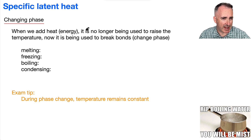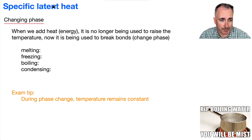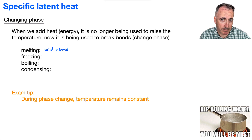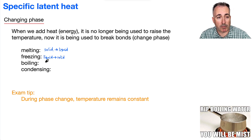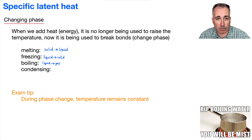It's important to understand the different phases. So melting — what is that? That's when you go from a solid to a liquid. And freezing is the opposite of that, so that's when you go from a liquid to a solid. Now boiling is when you go from a liquid to a gas. And finally, condensing is the opposite — so when you go from a gas to a liquid.